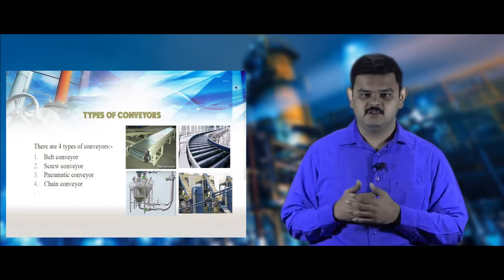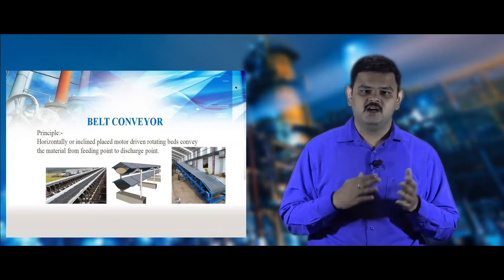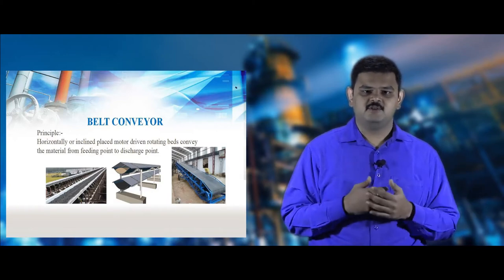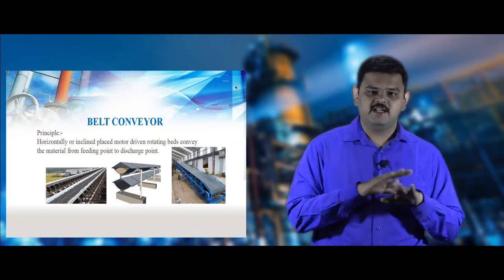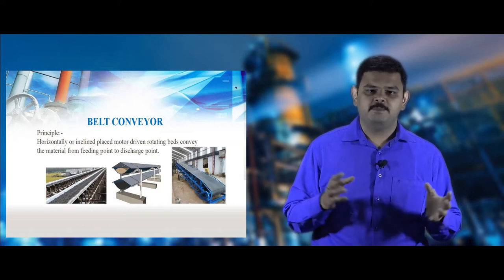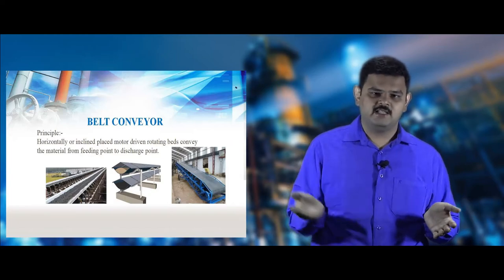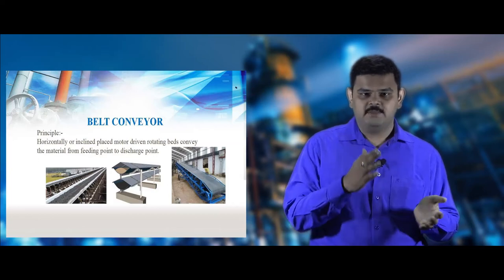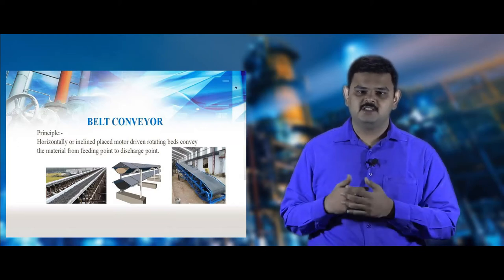Belt conveyors are mostly useful in cement industries or thermal power plants, transferring coal or cement limestone through a belt made of fabric or rubber. They can be placed horizontally or inclined at a particular angle. The motorized pulleys rotate at both ends — one moving forward and the other backward — operating the belt from forward to backward. Materials are fed through a feed hopper and discharged through discharge bins.